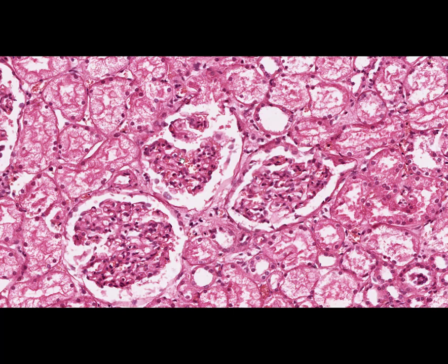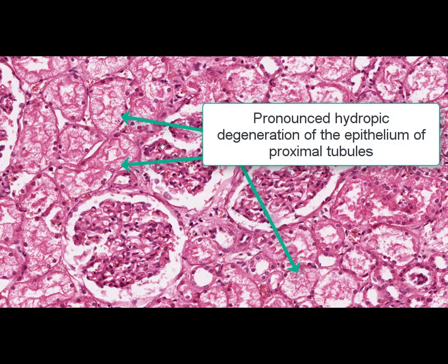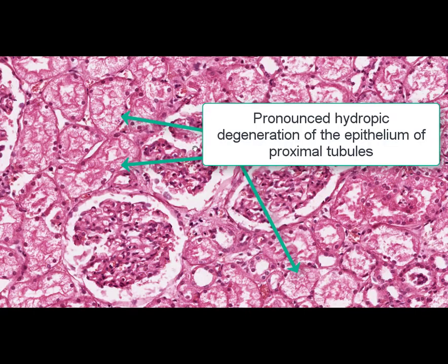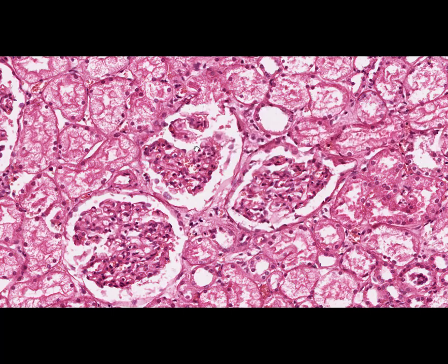At high magnification, we can see the epithelial cells of proximal tubules are increased in size. The cytoplasm is vacuolated and somewhat cleared. The lumen of the tubules is narrowed. Some epithelial cells have no nuclei, which is evidence of necrobiotic changes present in the epithelial lining.